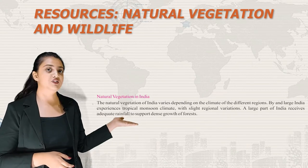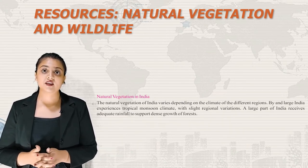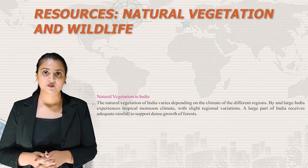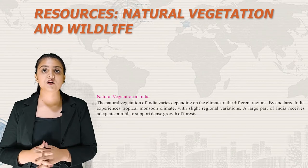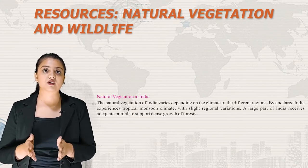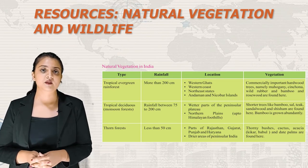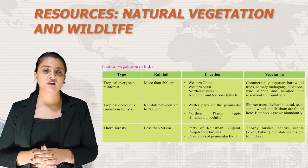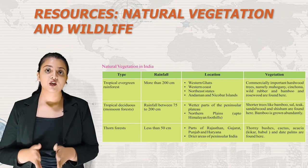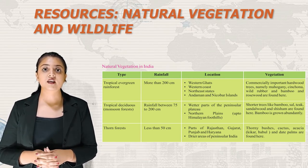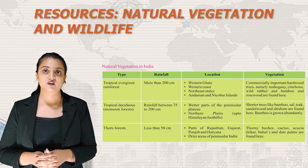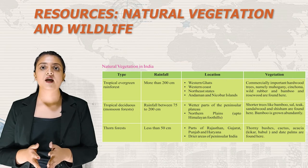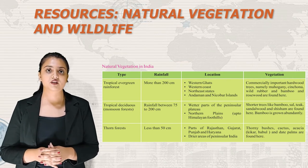The natural vegetation of India varies depending on the climate of different regions. India largely experiences a tropical monsoon climate with slight regional variations, and a large part receives adequate rainfall to support dense forest growth. The first type in India is Tropical Evergreen Rainforest, with rainfall over 200 cm, found in the Western Ghats, Western Coast, Northeast States and Andaman and Nicobar Islands. Vegetation includes commercially important hardwood trees such as Mahogany, Cinchona, Wild Rubber, Bamboo and Rosewood.